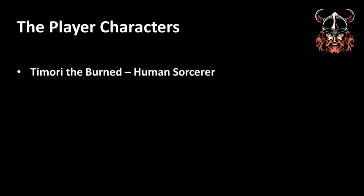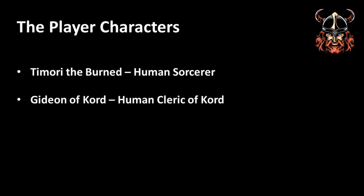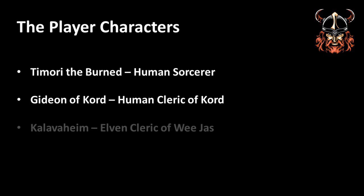That said, who are the player characters? An incredibly important part of campaign design is integrating the player characters into the environment, whilst remaining considerate of backgrounds and motivations. I'd been leaking a little bit of information to my four players here and there to help them build a character befitting of the campaign feel. This resulted in the following: Timori the Burned, a human sorcerer who had lost his family in a house fire and become a twisted pyromaniac; Gideon of Kord, a human cleric who prizes physical strength above all things; Calaverheim, an elden cleric of Ouijas, exploring the divide between the divine and the arcane; and Gohon, a human monk striving to be as perfect as he can, whilst running very fast. Clearly a sorcerer, two clerics and a monk presented me with some challenges for adventure design, but that's par for the course when being a DM.